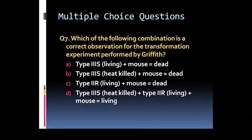Question 7: Which of the following combination is a correct observation for the transformation experiment performed by Griffith? Option A: Type S3 living strain plus mouse equal to death. Option B: Type S3 heat killed plus mouse results in death.